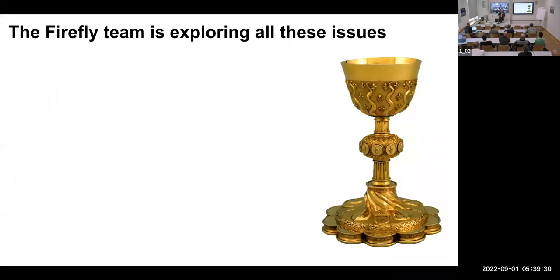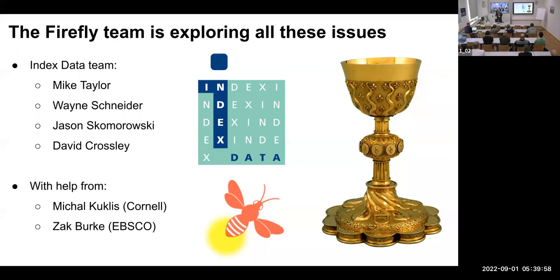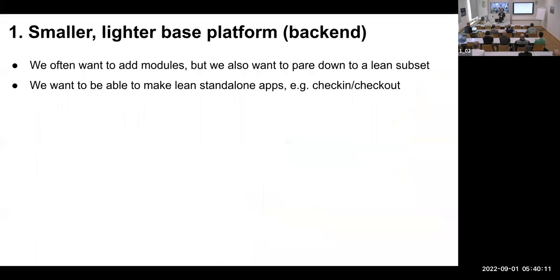There's a group of us that have been looking at this for the last couple of months. We've been calling ourselves the Firefly team. That's largely Index Data people — myself and Jason Skomoroski, who are developers; Wayne Schneider on the ops side; and David Crossley. We also consider Zach and Mikhail part of this team, as the work they've been doing is very much aligned with this goal. Here are some of the directions we're going — a lot is aligned with what's happening elsewhere in the FOLIO community, some is new, and we're looking for feedback.